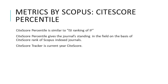Moving to CiteScore Percentile — it is similar to ISI ranking of impact factor. CiteScore Percentile gives the journal's standing in the field on the basis of CiteScore rank among Scopus-indexed journals. Remember, it applies only to Scopus-indexed journals. So like ISI ranking, CiteScore Percentile provides subject ranking of journals, but it is limited to the Scopus database.